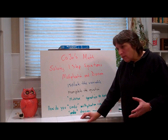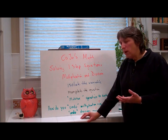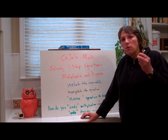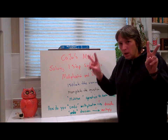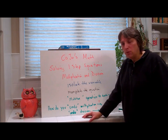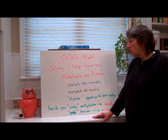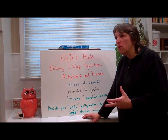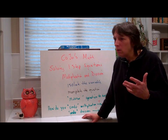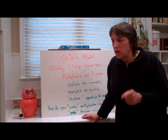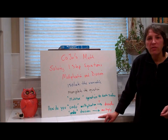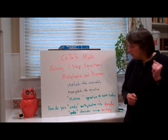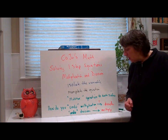How do we isolate the variable and manipulate the equation using the inverse? By looking to see what is actually being done to the variable. So how do you undo multiplication? What is the inverse of multiplication? Division. And how do you undo division? What's the inverse of division? That's correct — you multiply.